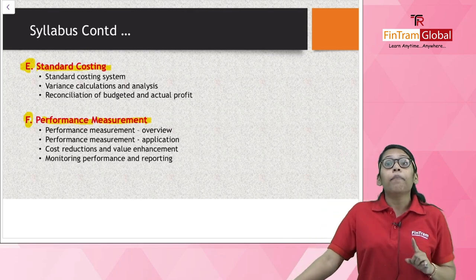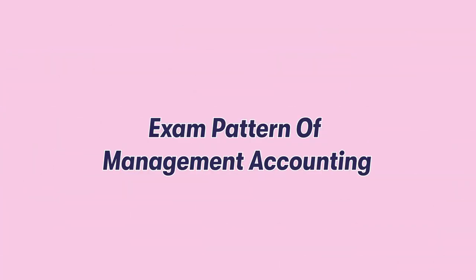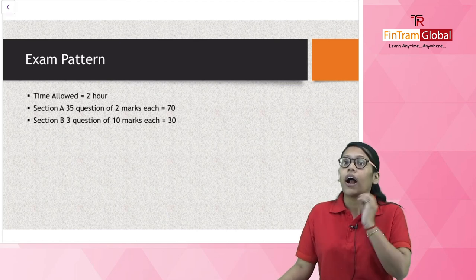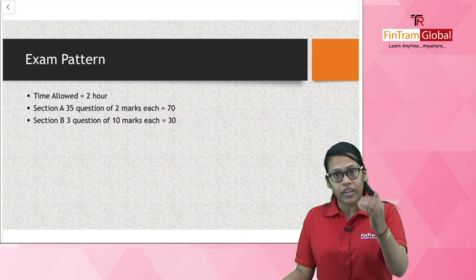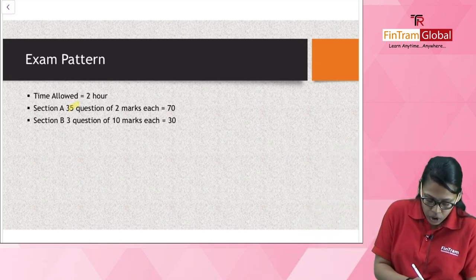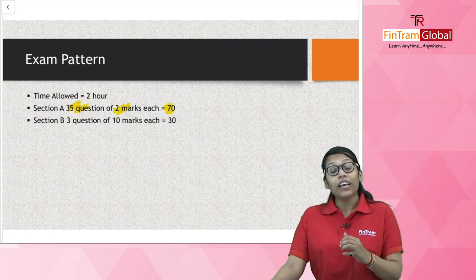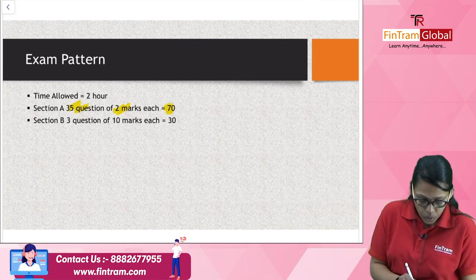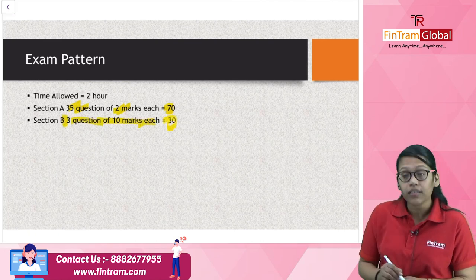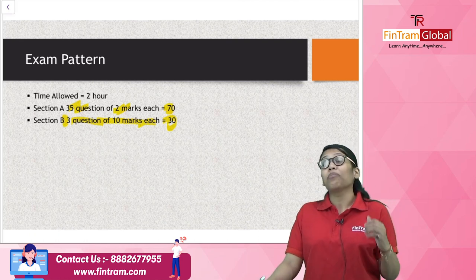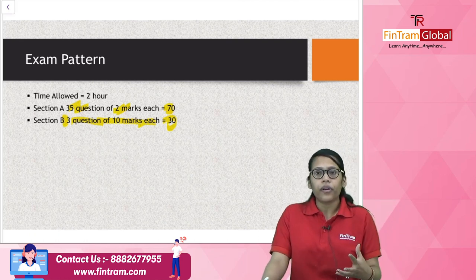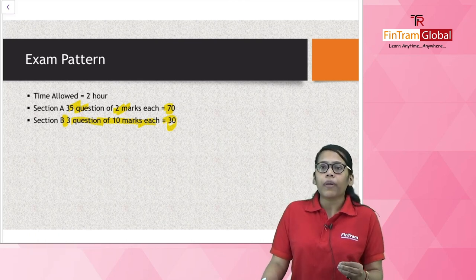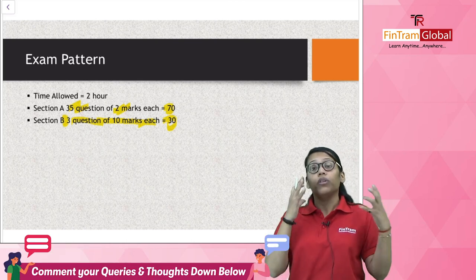Now let's talk about the exam pattern. Management accounting is an on-demand paper — it is a two-hour paper of 100 marks, divided into two sections. Section A has 35 questions of 2 marks each, totaling 70 marks; these are objective-type, OTQ-based questions. Section B has three questions of 10 marks each, totaling 30 marks. These are elaborated case-study style questions, with up to five sub-parts of 2 marks each — and we will practice case studies too, so don't worry.